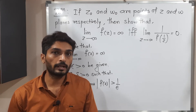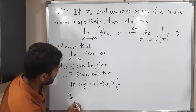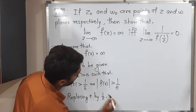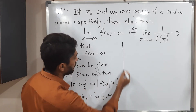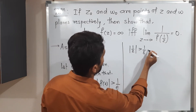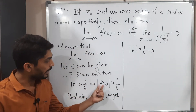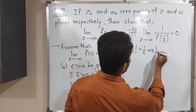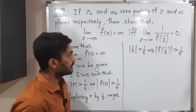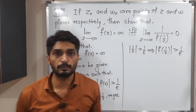After that, I am going to replace z by 1/z. Let us see what we get when we replace z by 1/z. We will have mod(1/z) greater than 1/delta, which implies on the other side we also replace z by 1/z, giving mod f(1/z) greater than 1/epsilon.